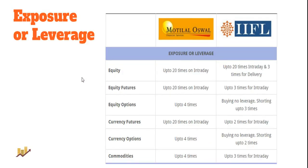Regarding exposure or leverage — for those unfamiliar, it is essentially a small loan provided by your stock broker based on your trading account balance and trading behavior, meaning recent profits and losses. Both Motilal Oswal and IIFL give you 20 times exposure for equity intraday; so with 10,000 rupees in your account, you can trade up to 2 lakh rupees intraday. There is no delivery exposure for Motilal, but IIFL provides three times your balance. In futures, Motilal Oswal's 20 times is one of the best in the industry, far better than IIFL on this front.